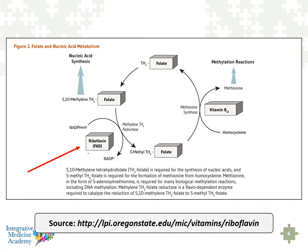In the methylation cycle, riboflavin is needed for the activation of MTHFR. Most people know MTHFR as the activator of inactive to active folate. The form of folate that gets converted into 5-methylfolate is called 5,10-methylene tetrahydrofolate, which is critically important for nucleic acid production. The 5-methylfolate plays a big role in methionine synthase activity for the conversion of homocysteine to methionine as a main reaction within the methylation cycle. So very simplistically, you could think of riboflavin as a key factor in methylation and folate biochemistry.